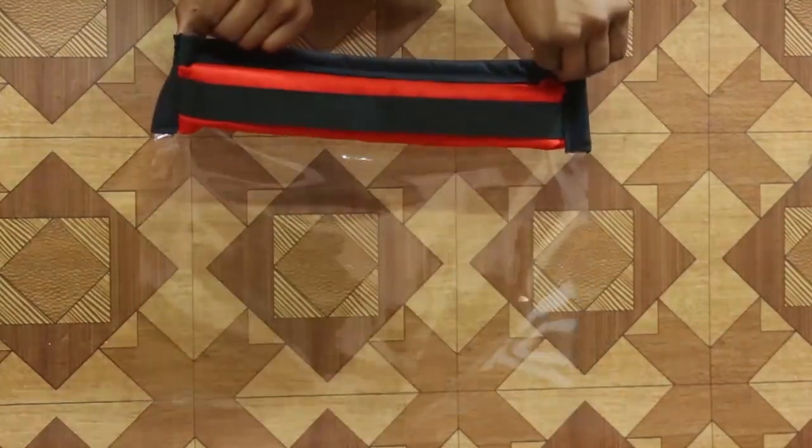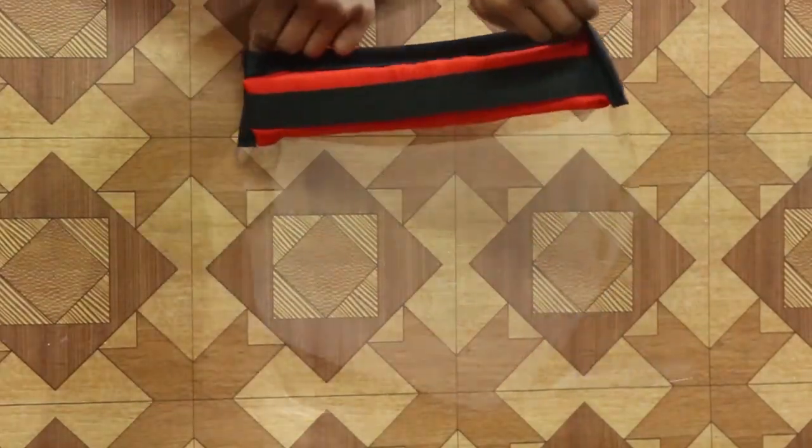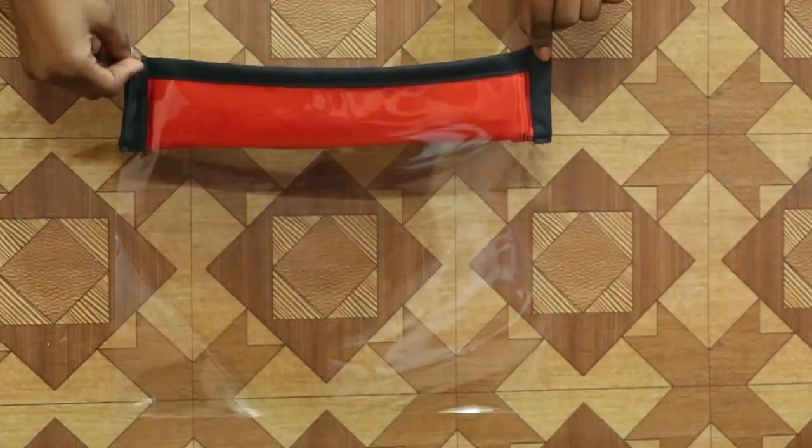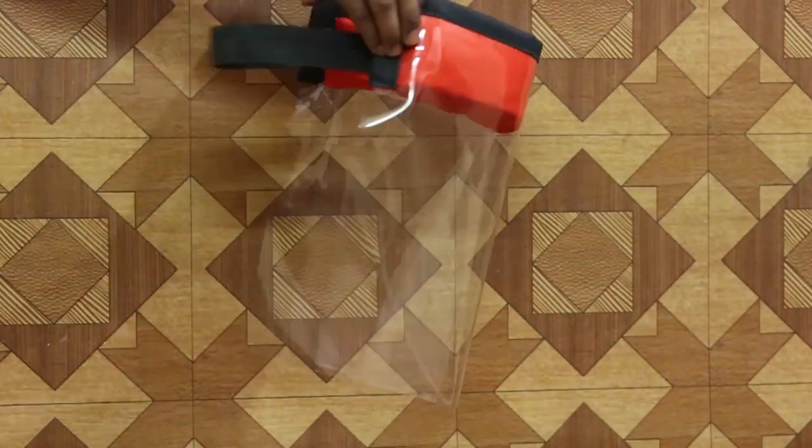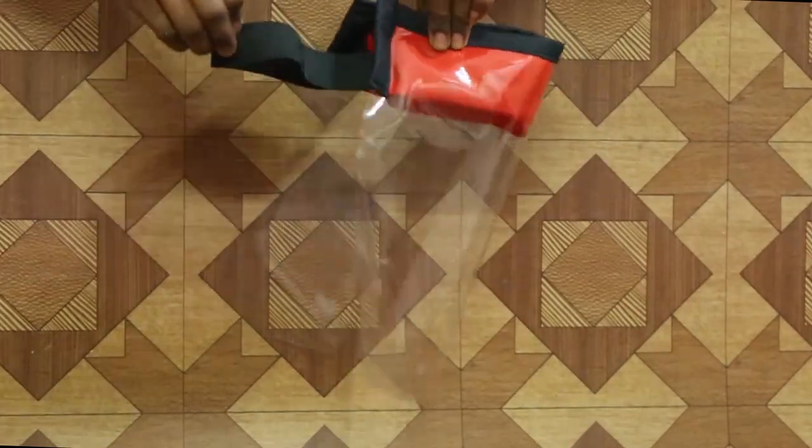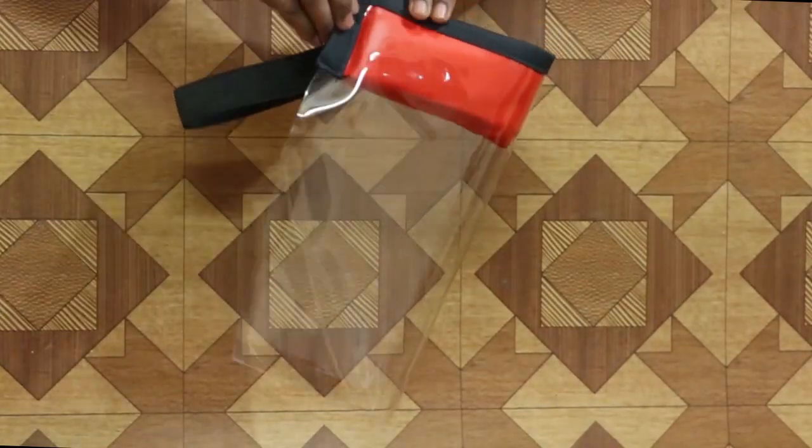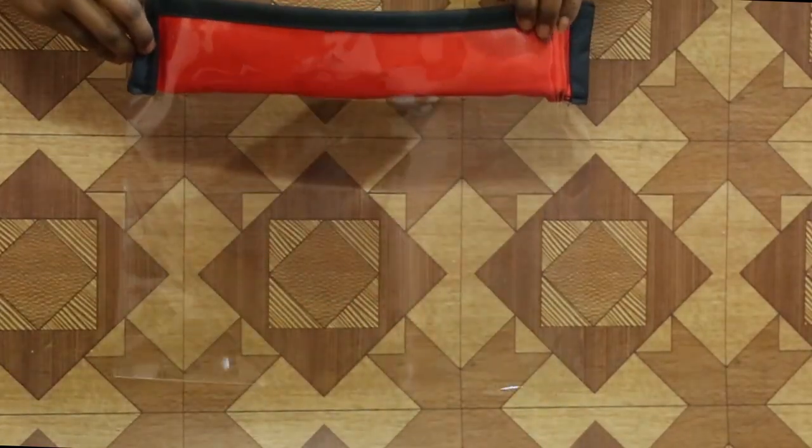These face shields are made up of foam, elastic, PVC material, and a red cotton cloth. This red cotton cloth absorbs the sweat on your forehead. The high quality elastic goes to the back of your forehead and fixes the face shield.